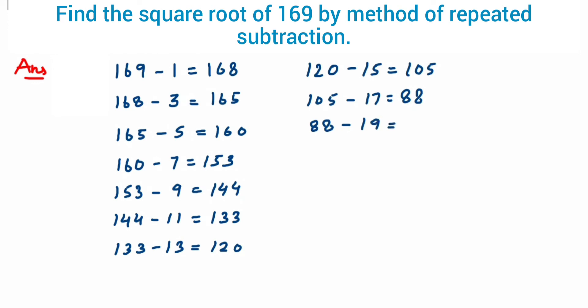Now 88 minus 19, so this is equal to 69. Next 69 minus 21, so this is 48 we'll get here. Next 48 minus 23, so this is 25.